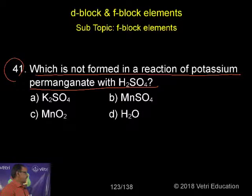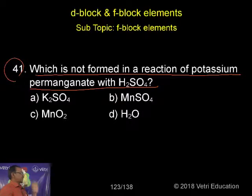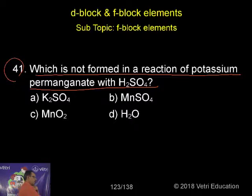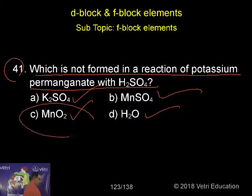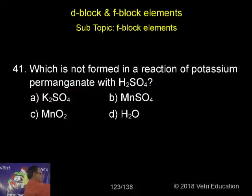Now the question is: which compound is NOT formed in the reaction between potassium permanganate and sulfuric acid? The options are: potassium sulfate, manganese sulfate, MnO₂, and water. So probably MnO₂ is not formed.